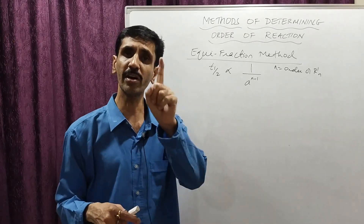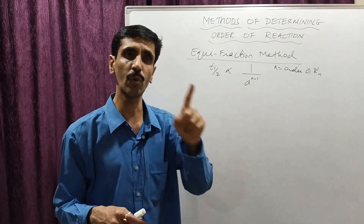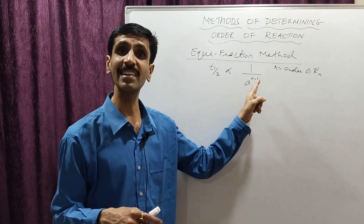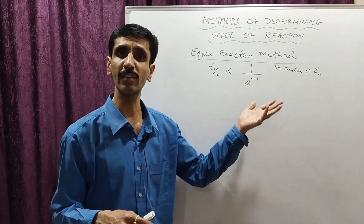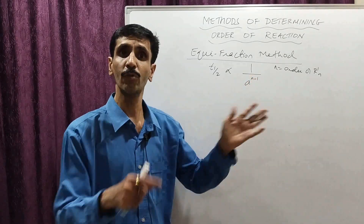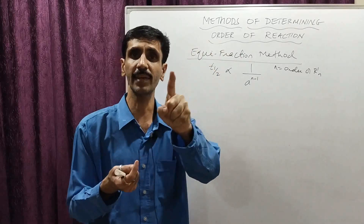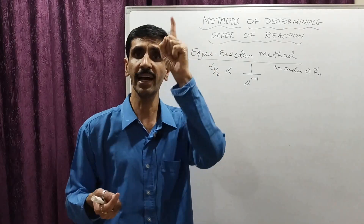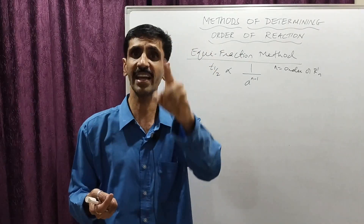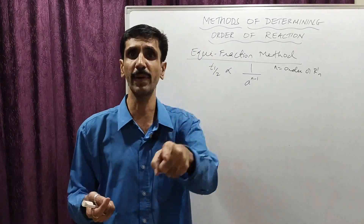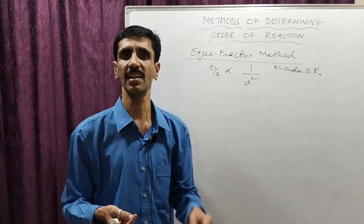If the order of reaction n is equal to 1, then 1 minus 1 is 0, and anything raised to 0 is 1, so it disappears. This means the half time of a first order reaction is independent of the initial concentration.